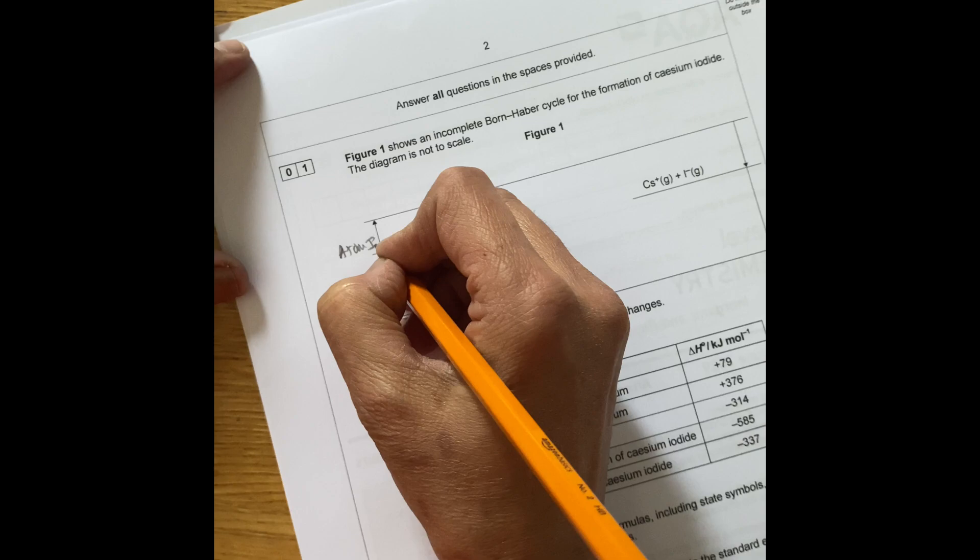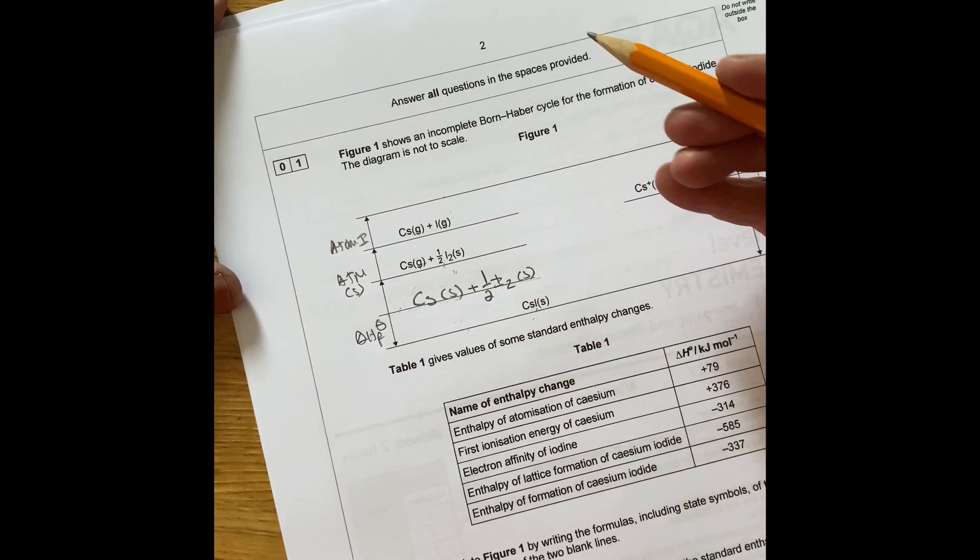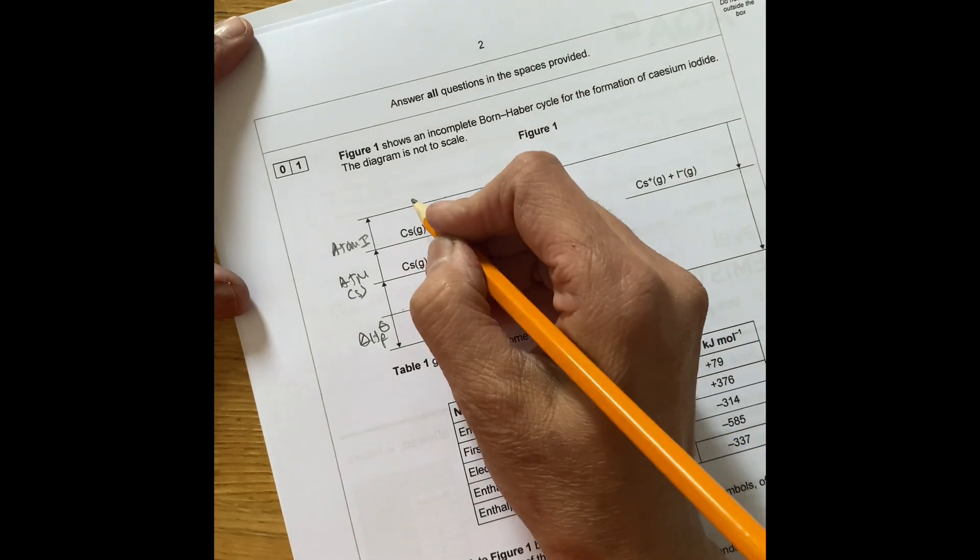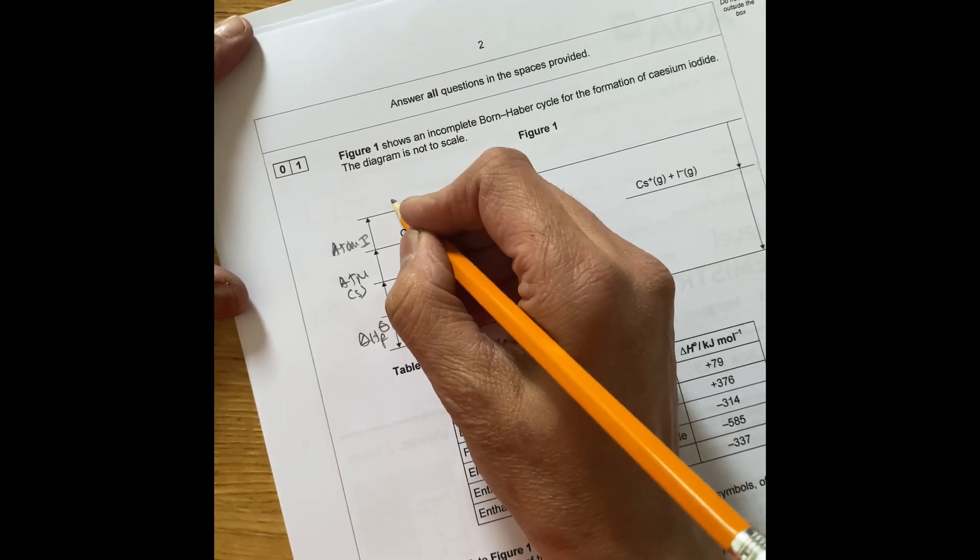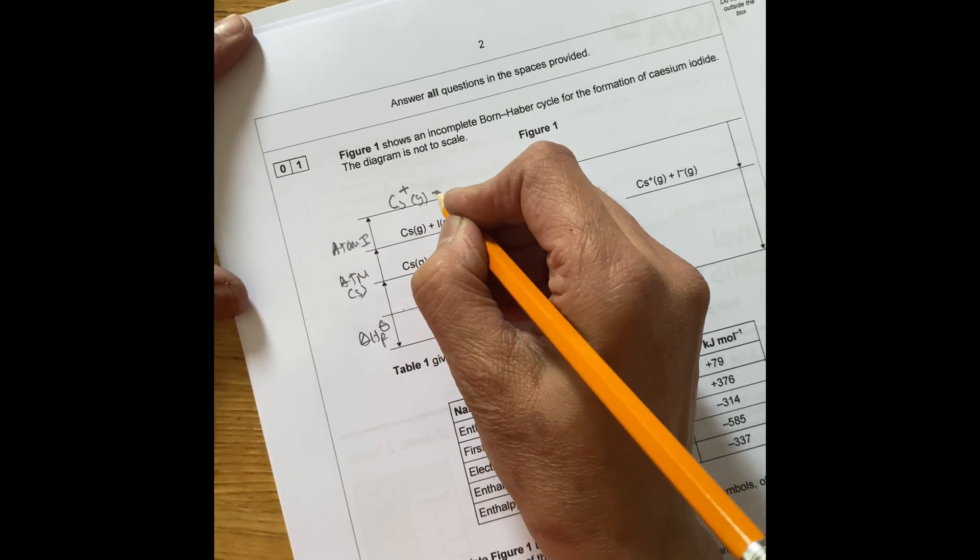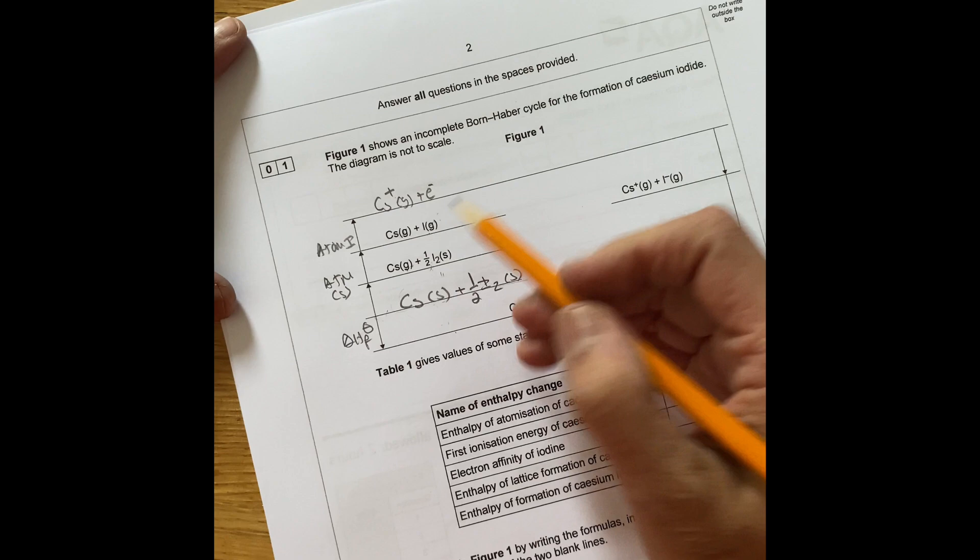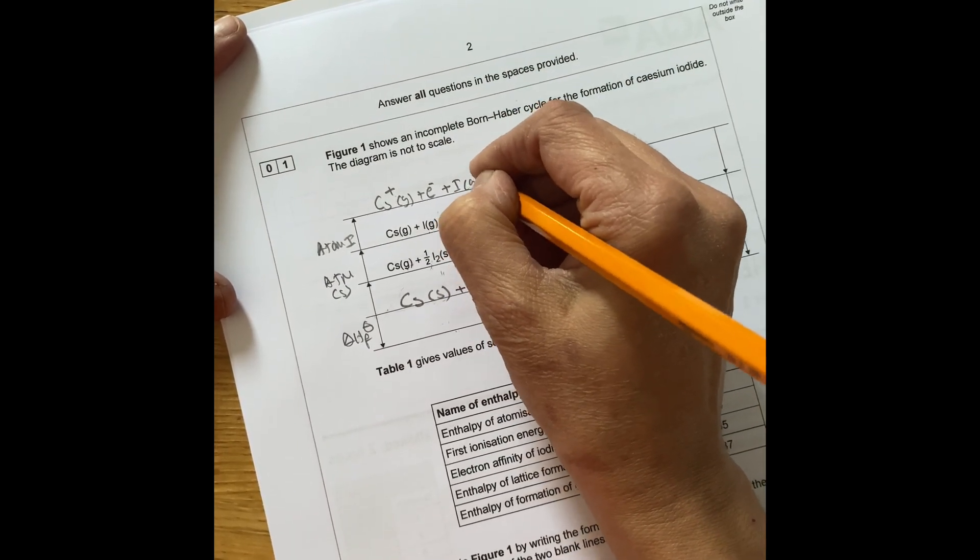The next bit here is the first ionization energy of cesium. So cesium goes from cesium gas to cesium plus one gas plus electron.